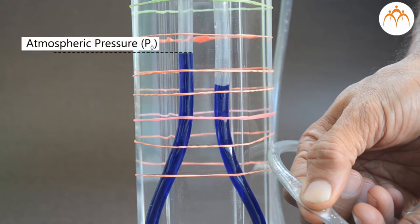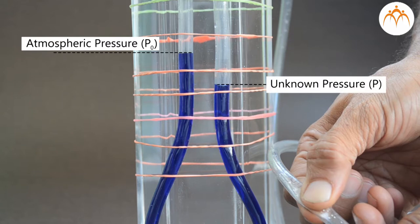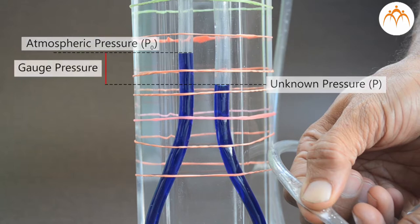While the other end is connected to system of unknown pressure, P. Let's call P0 atmospheric pressure while P is the unknown pressure. The difference between these two is called Gauge pressure.